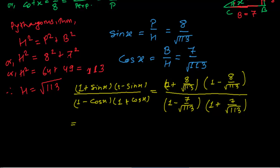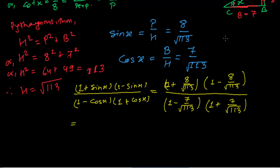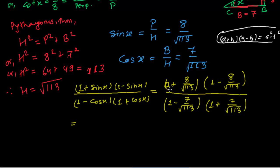This looks like the algebraic identity (A + B)(A − B) = A² − B². We can apply that formula here. The numerator becomes 1² − (8/√113)², and the denominator becomes 1² − (7/√113)².